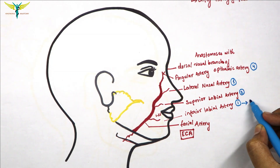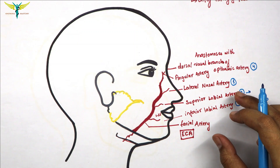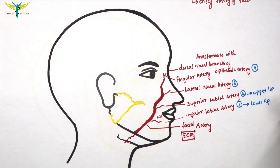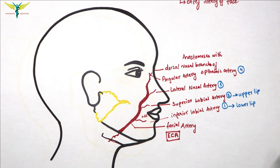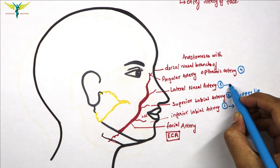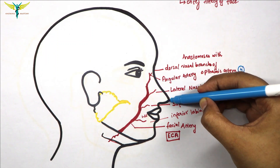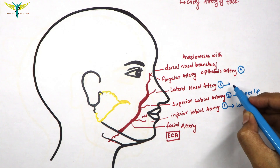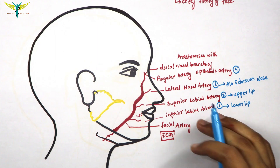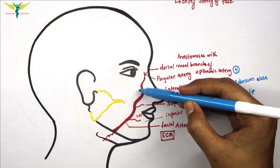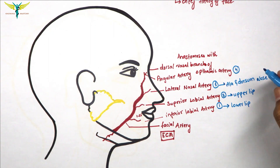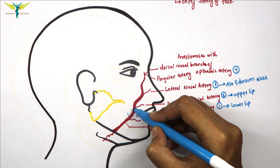The inferior labial artery supplies the lower lip, and the superior labial artery supplies the upper lip. The lateral nasal artery supplies the ala and the dorsum of the nose. There are also a few muscular branches which arise posteriorly; all the named branches arise anteriorly, while the posterior branches supply the muscles.